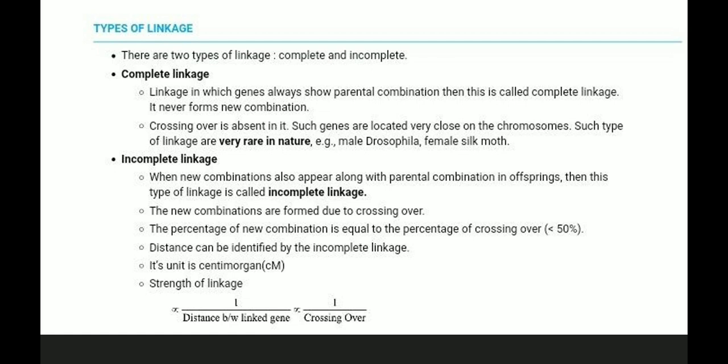The new combinations are formed due to crossing over. The percentage of new combinations equals the percentage of crossing over. The distance between linked genes can be identified by incomplete linkage. Its unit is centimorgan (cM). The strength of linkage is inversely proportional to the distance between linked genes and inversely proportional to the frequency of crossing over.